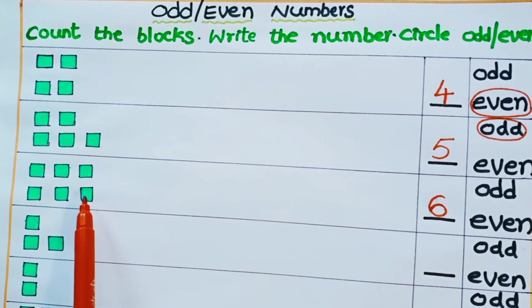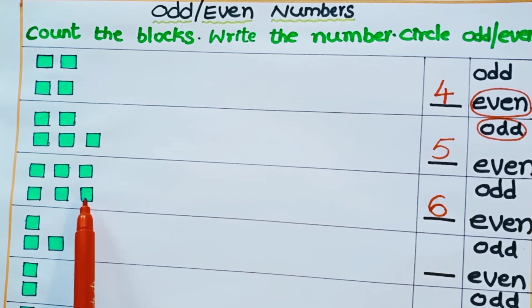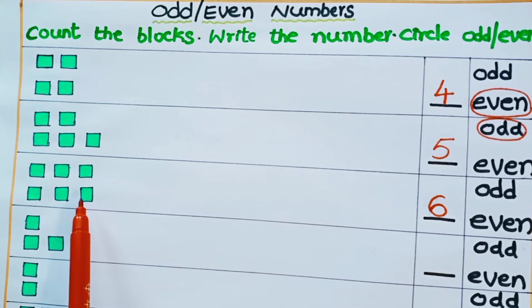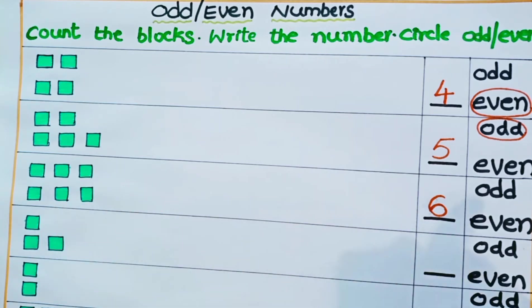Is there any unpaired block? No, there are no unpaired blocks. All the blocks have been paired up. So is 6 an odd number or even number? You are right — 6 is an even number.